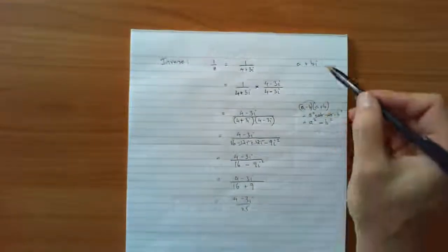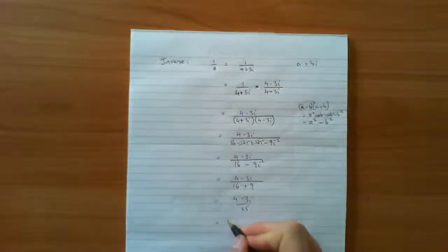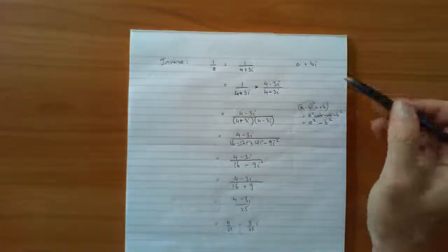Or to write it in standard form like I showed up here, that's really, if we wanted to, 4 over 25 minus 3 over 25 i. And that's now in a plus bi form, which is standard form.